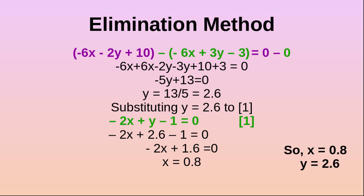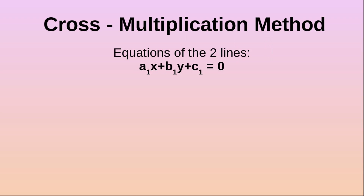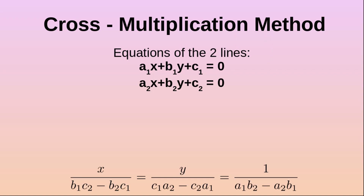Now let's solve the same equations using the cross multiplication method. For the general form A1x plus B1y plus C1 equals 0 and A2x plus B2y plus C2 equals 0, the cross multiplication formula gives: x divided by (B1C2 minus B2C1) equals y divided by (C1A2 minus C2A1) equals 1 divided by (A1B2 minus A2B1). This formula looks complicated, but there is a trick to remember it.